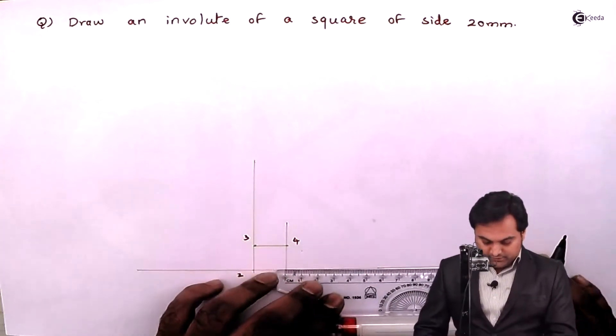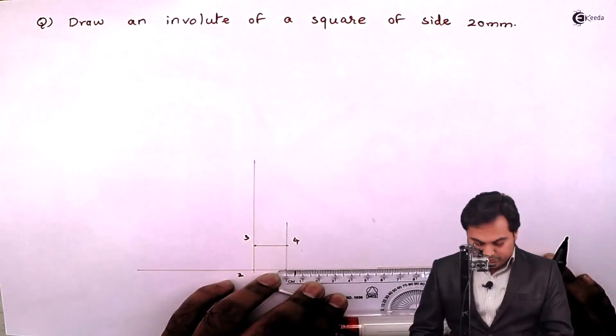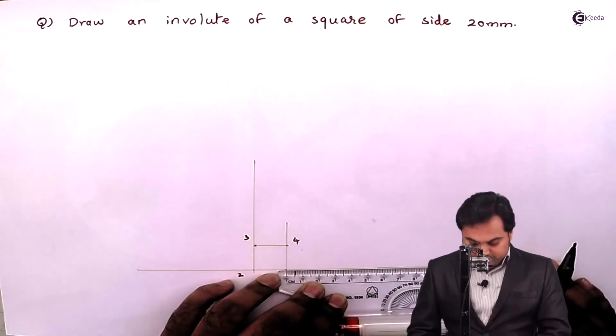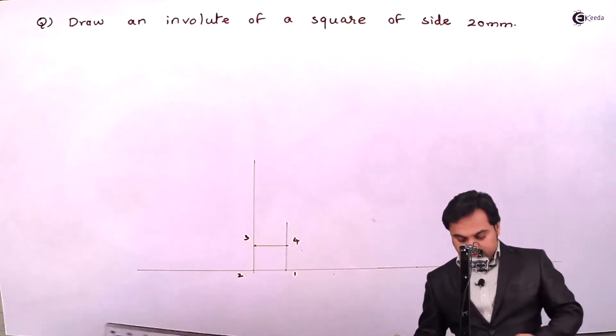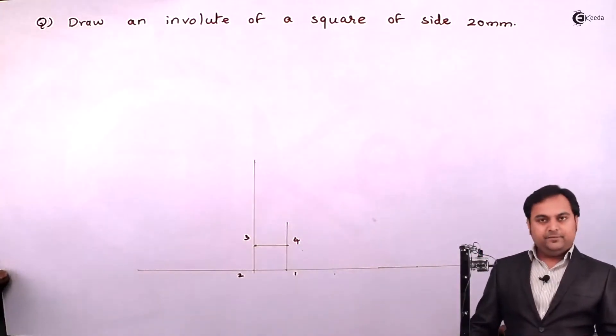So for that, from point number one, because I will be unwinding it from point one, I am taking the reference as 80mm length. This will indicate the perimeter.